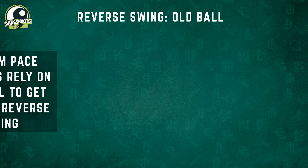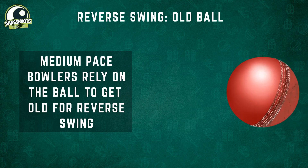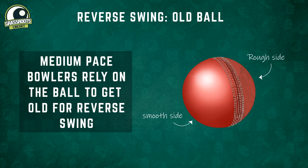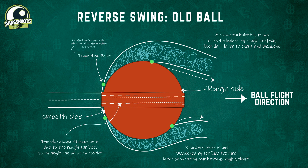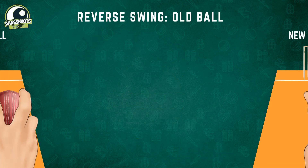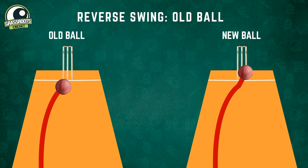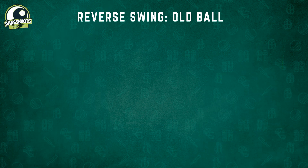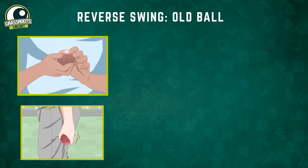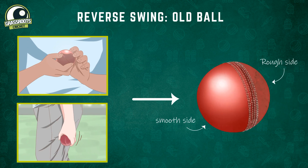Most bowlers who can't bowl 90 miles plus consistently have to wait for the ball to get older before they are able to reverse swing it. A rougher surface means the speed at which the transition from laminar to turbulent flow on the non-seam side occurs decreases, and reverse swing is therefore achieved at lower speeds than in the case of a new ball. As the match progresses, bowlers begin polishing one side of the ball and keep the other scuffed. The transition from laminar to turbulent then happens naturally, without any input from the seam position.